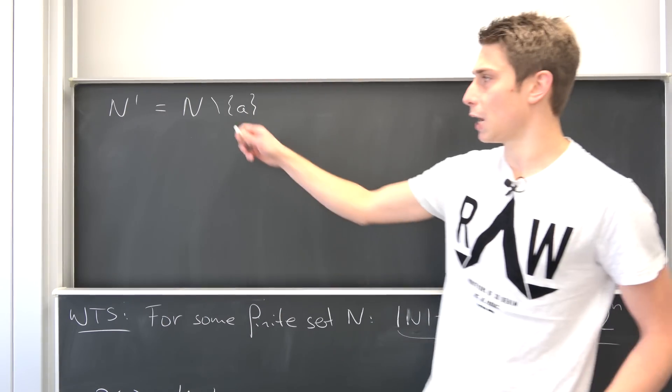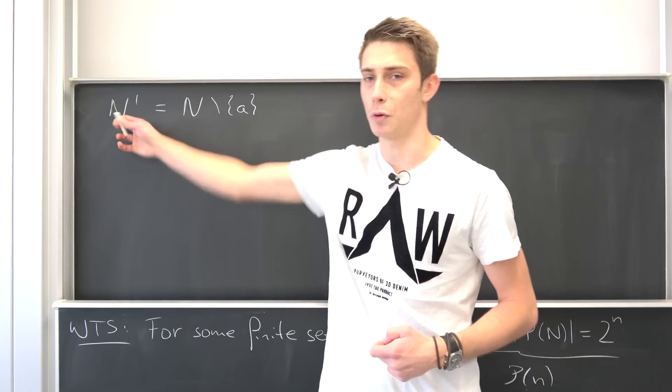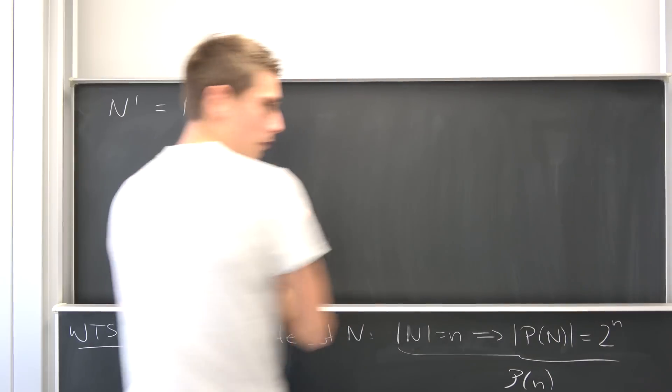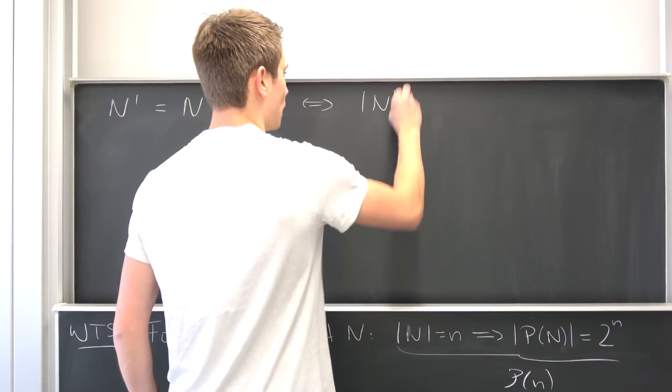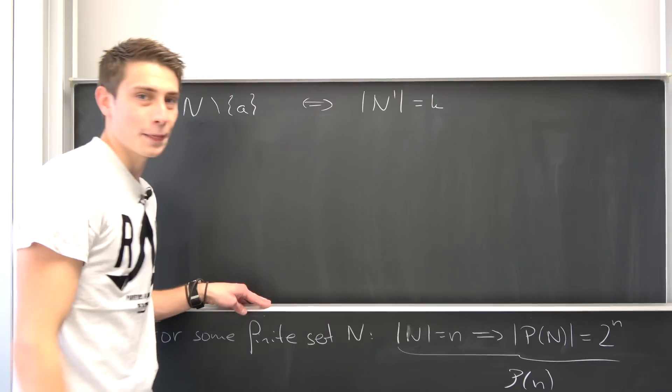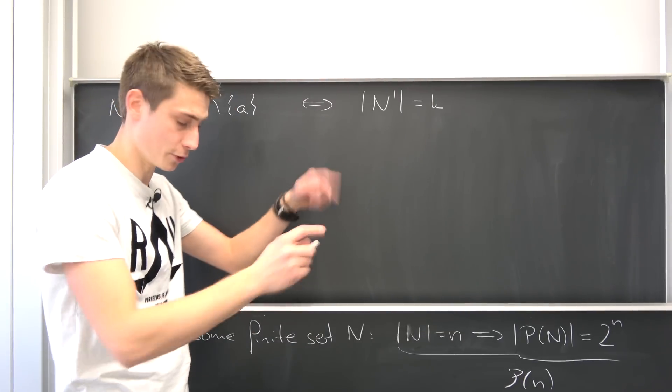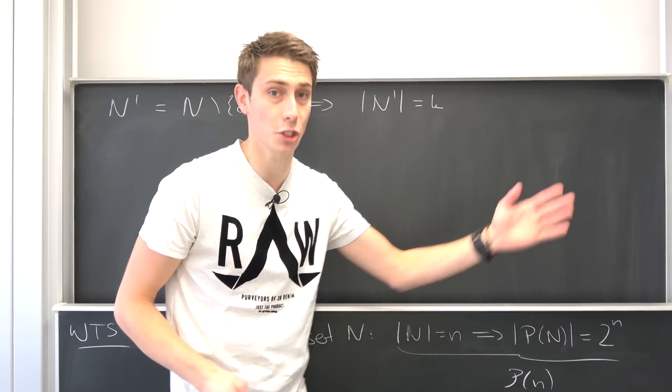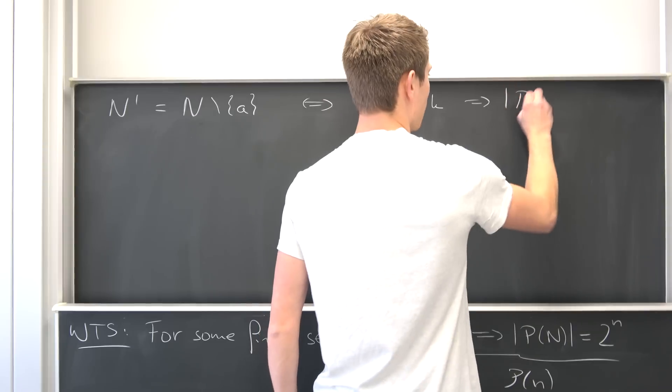That means we are removing one element from the set N right here, meaning the cardinality of N prime is K plus one minus one, which is just K. So that's equivalent to saying that the cardinality of N prime is now nothing but K. But here it goes. Now we can use our induction hypothesis, because if you don't use your induction hypothesis, you are not doing induction at all. You are doing pure dogshit, probably.